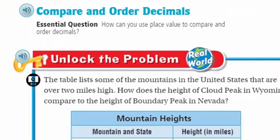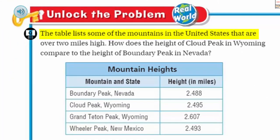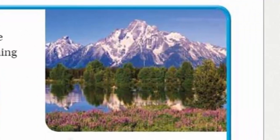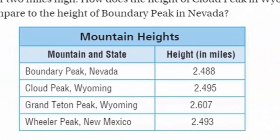Unlock the problem. It says here, the table lists some of the mountains in the United States that are over two miles high. How does the height of Cloud Peak in Wyoming compare to the height of Boundary Peak in Nevada? Oh, you know how I love my mountains. I like that hiking. Look at, we have the Tetons are located in Grand Teton National Park. Oh, what a beautiful sight. Yes. Anyway, let's look at our table. Our table shows mountain heights.